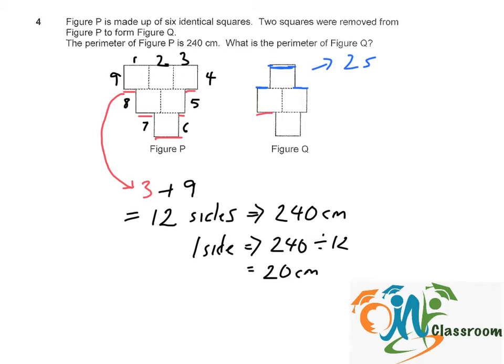And this red line plus the other 2 add up to another 2 sides. Now let's count the vertical lines. We have 1, 2, 3, 4, 5, and 6. So 6 plus 2 plus 2, we have a total of 10 sides.